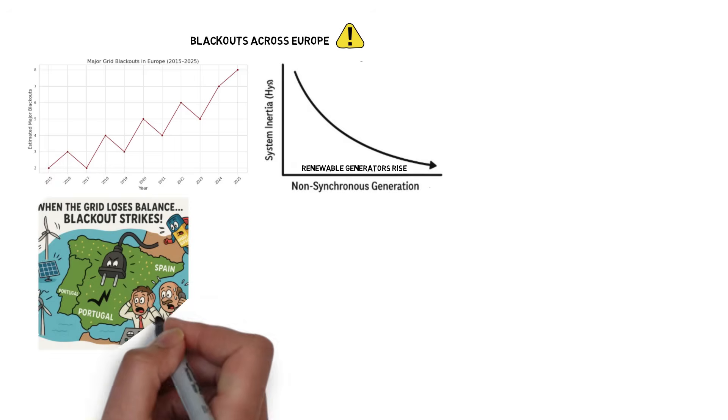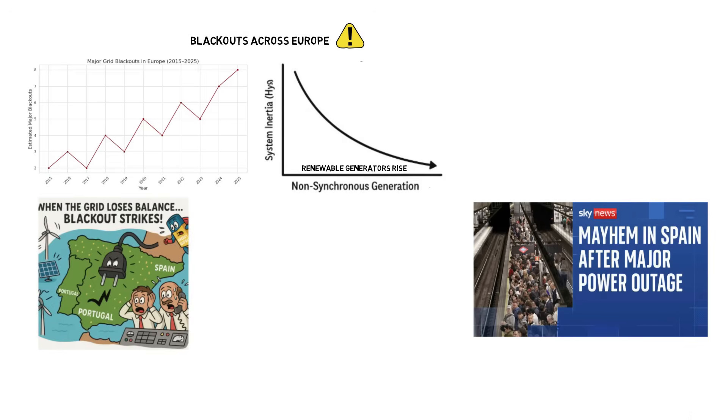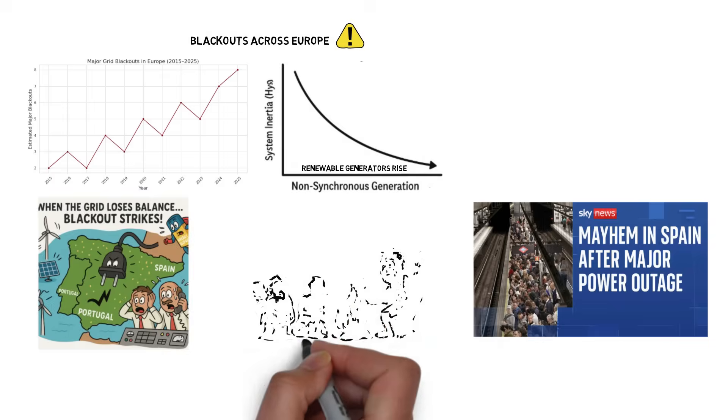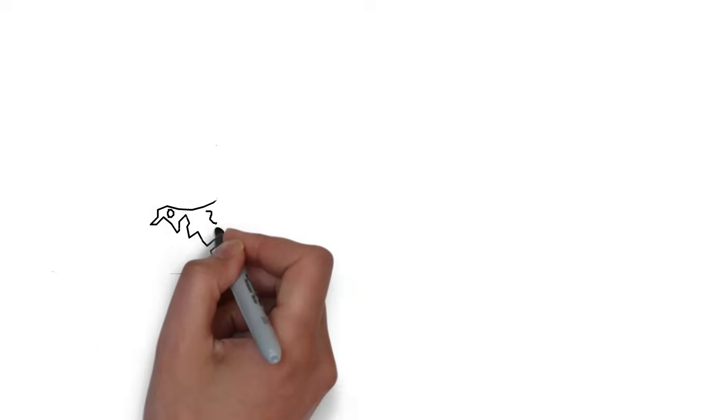Then came April 2025. A massive blackout swept through Spain and Portugal, plunging millions into darkness. For hours, modern life stalled. It was as if the grid had vanished and the Stone Age returned. So, what's the solution to this growing crisis?